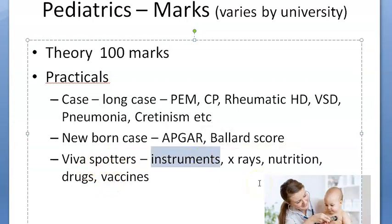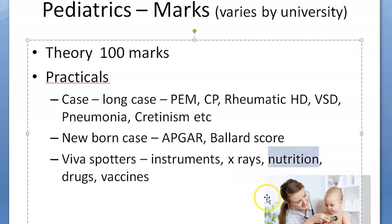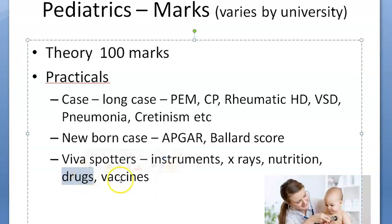For spotters in theory, you will have instruments like endotracheal tube, feeding tube, etc. X-rays — usually a diaphragmatic hernia, etc. For nutrition, they will ask you a lot about foods and their nutritive value. For drugs, they will ask you about adrenaline/epinephrine, emergency drugs for resuscitation, and many other drugs.